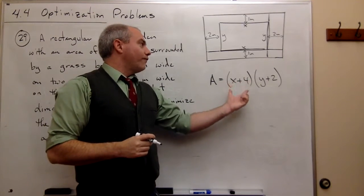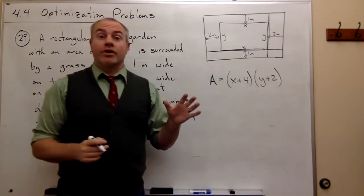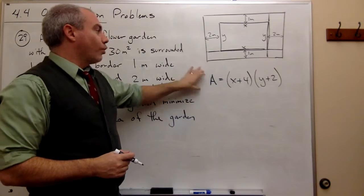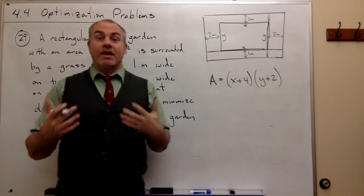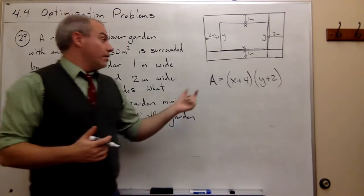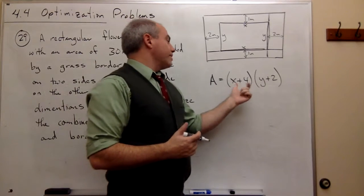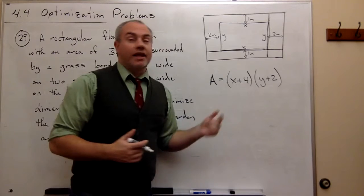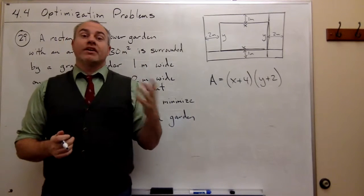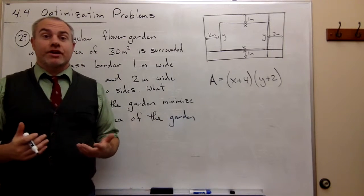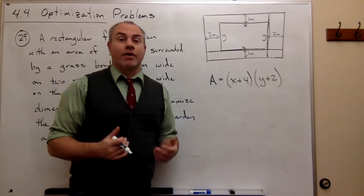So our first two really important steps are done. We drew a picture. We have a formula for the thing that we're trying to make big or small, which is the area of the combined border and garden. But the problem is we have two different variables in that formula. So we need to get rid of one of those two variables using any extra information that's given to me in the problem.